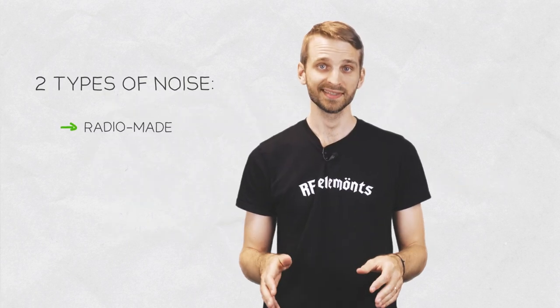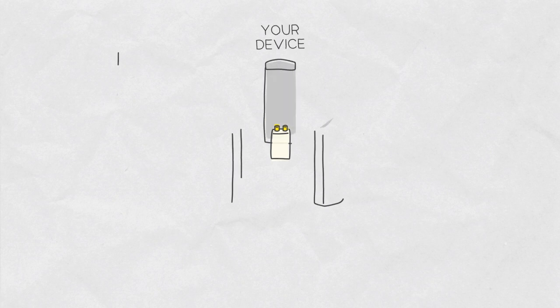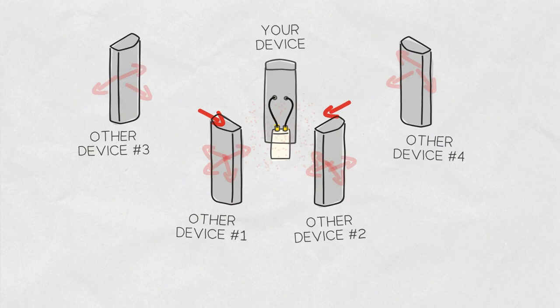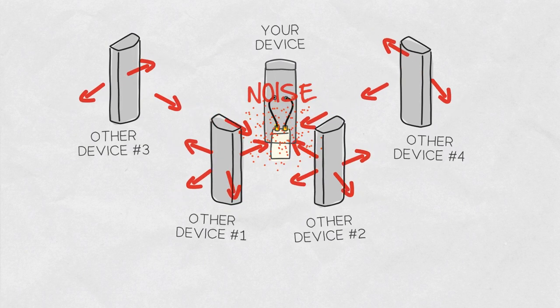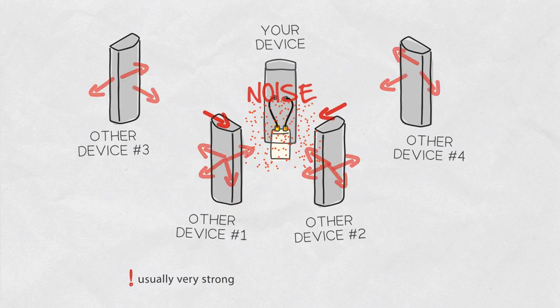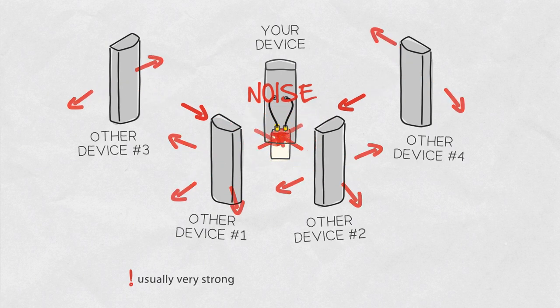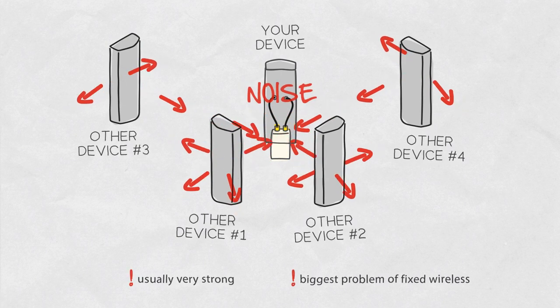Second type of noise is man-made. The devices located near your radio produce signals seen as noise by your radio and are received through the antenna. The man-made interference is usually much stronger than the noise created by the radio itself and is the biggest problem of fixed wireless networks.